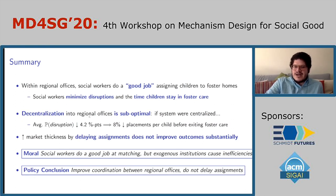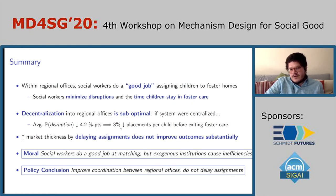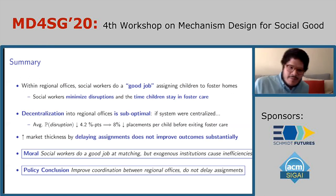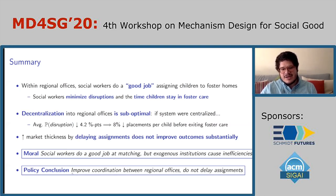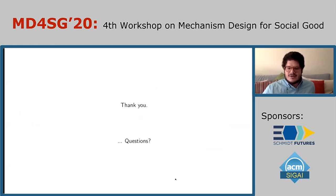If the system were centralized at the county level, the average probability of disruption would go down, meaning the average number of foster homes children go through would decrease. The moral of the paper: social workers are actually doing a good job at matching, but exogenous institutions — the design of the county into regional offices — are causing inefficiency. In terms of policy, the message is to improve coordination between regional offices rather than delay assignments.